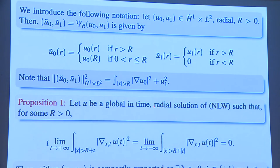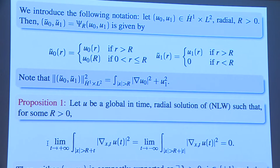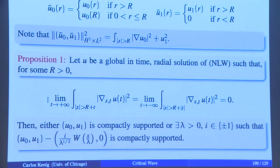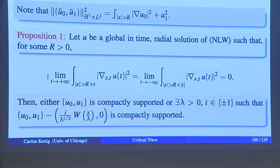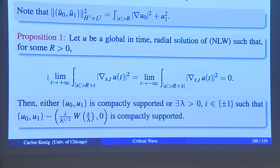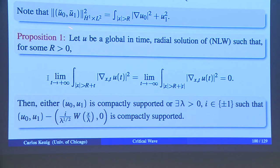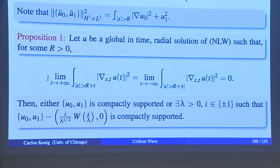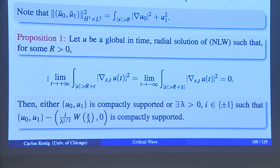The first proposition: suppose U is a global in time radial solution of the nonlinear wave equation in 3D, and suppose that both limits — for negative time and for positive time — are zero for some R. Then the data has only two options: it is either compactly supported, or it equals W except for a compact set. For R large, the data has to be either zero or W — that's the only way both limits can be zero.